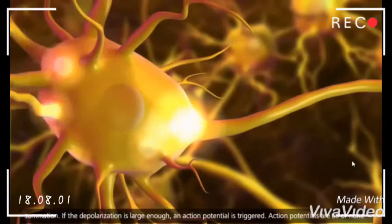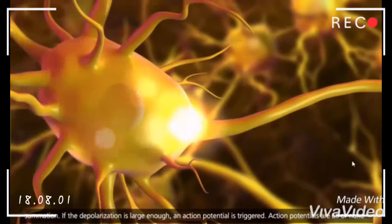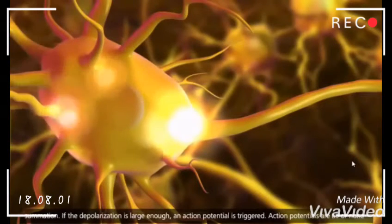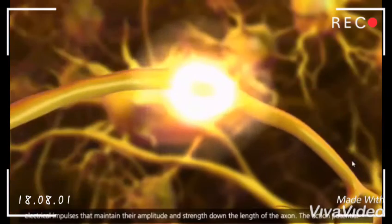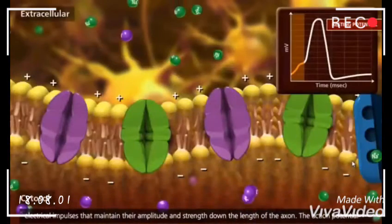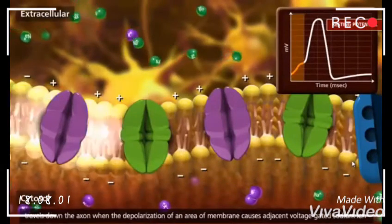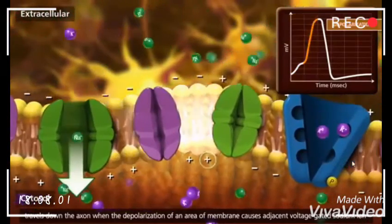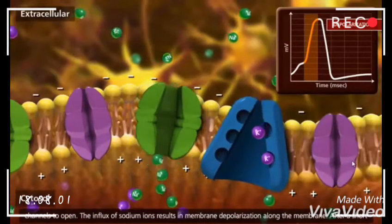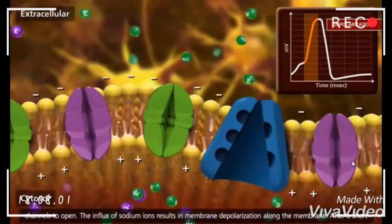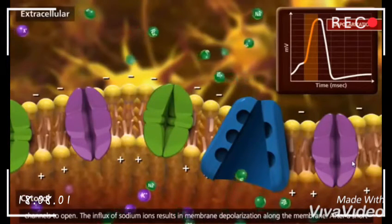If the depolarization is large enough, an action potential is triggered. Action potentials are all-or-none electrical impulses that maintain their amplitude and strength down the length of the axon. The action potential travels down the axon when the depolarization of an area of membrane causes adjacent voltage-gated sodium ion channels to open.